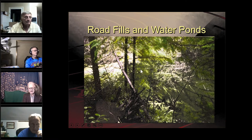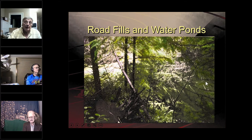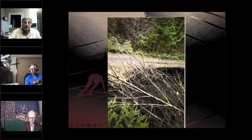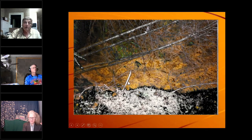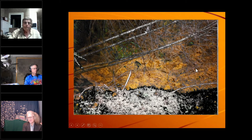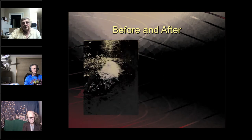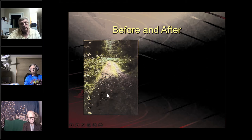A lot of old road construction put pipe culverts in high — sometimes intentionally to create a water pond for firefighting, sometimes because they put part of a fill in, then installed the pipe, leaving a pond on the upper side. You can see the escarpment of what happened when that fill saturated. Looking down slope, all of this material headed downslope into the stream.